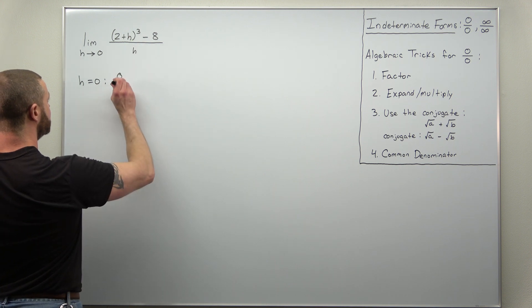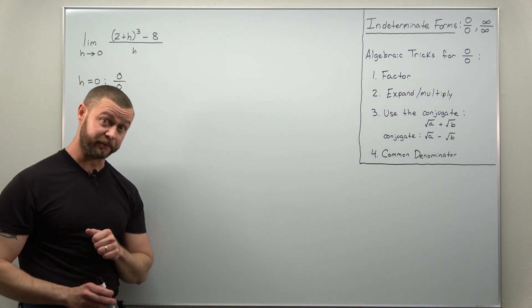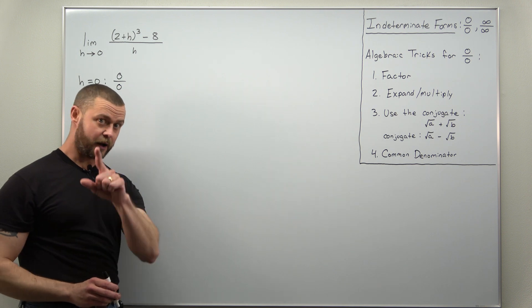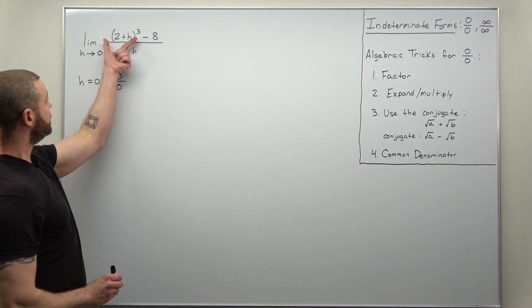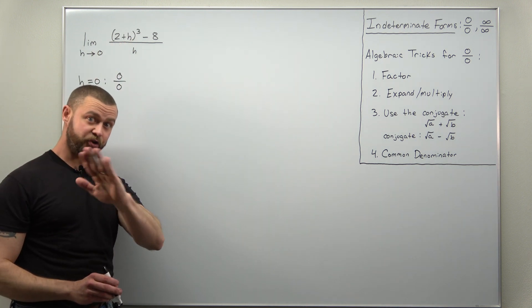And then your denominator, that's zero, so we have an indeterminate form here. All right, now the work for this problem would be multiplying or expanding (2 + h)³.